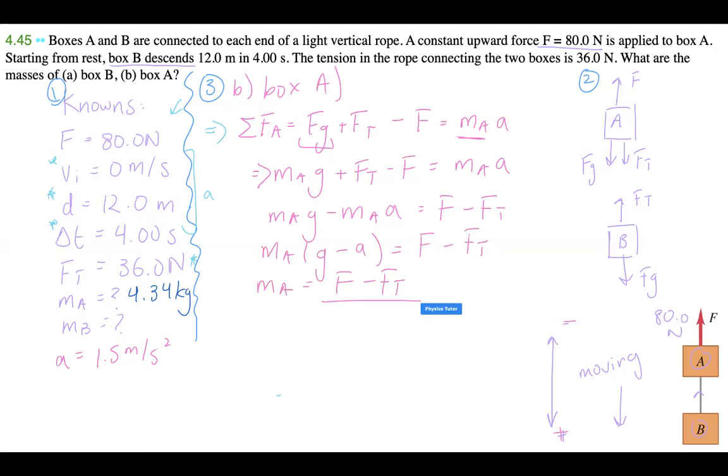So M_A is going to be (g minus a), and then it's going to be F minus F_T. So let's isolate for M_A. It's going to be F minus F_T over g minus a. And M_A is equal to 80 minus 36 over 9.8 minus 1.5. I'm just going to write that down again. 44. 5.30 kilograms. So that is the mass of box A. So that's the end of our question.